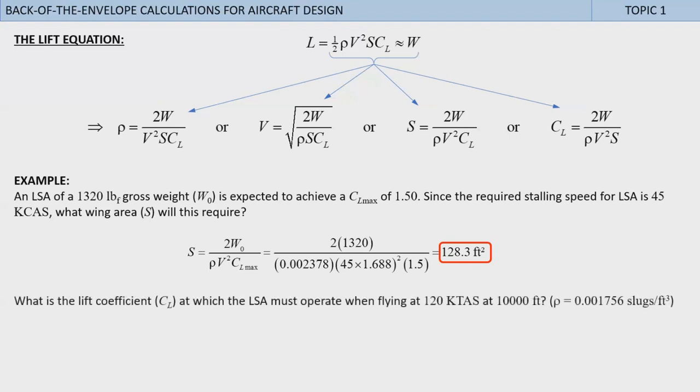This value is in the ballpark of many existing 1,320 pound LSAs. The next example: what is the lift coefficient CL at which the LSA must operate when flying at 120 kTAS at 10,000 feet, where ρ equals 0.001756 slugs per cubic foot? Here we pick the last equation of the four and plug and chug to get 0.2856. Later topics in this video show why it might come in handy to extract this value.